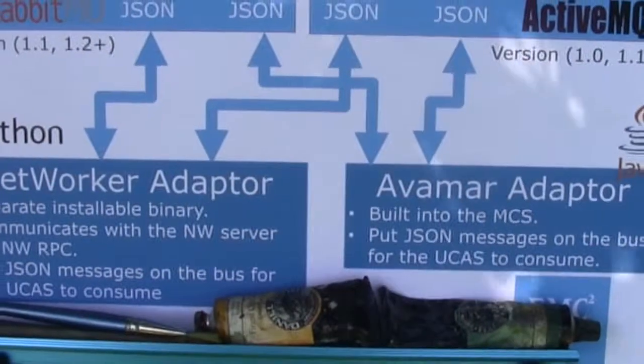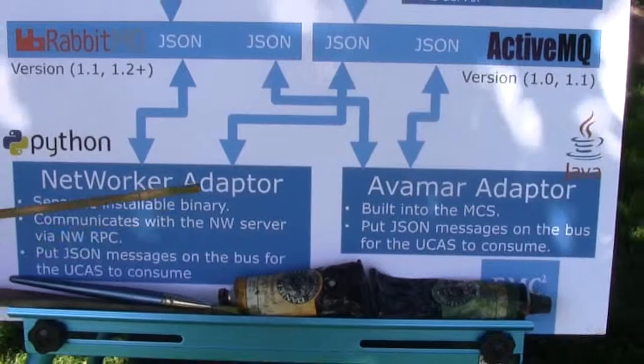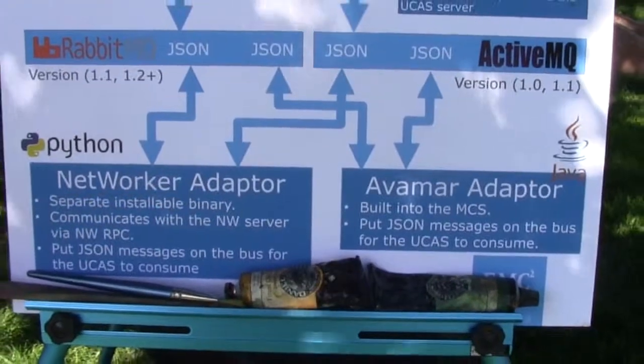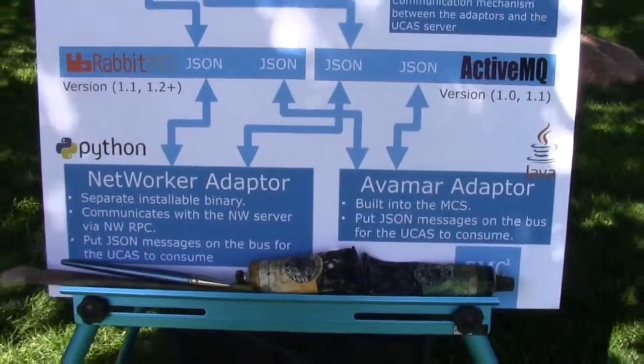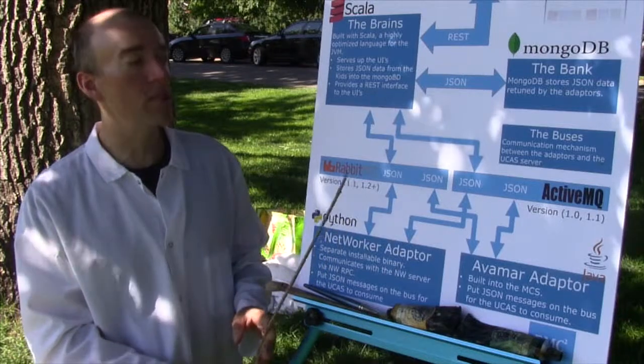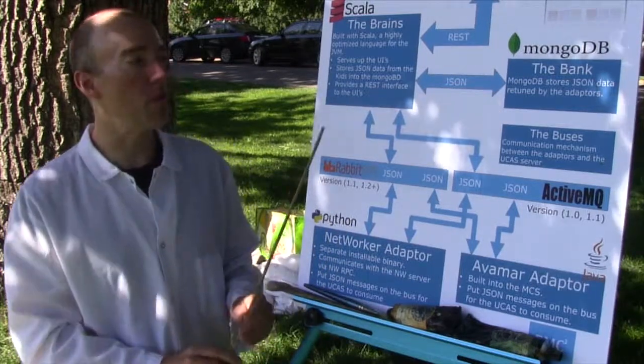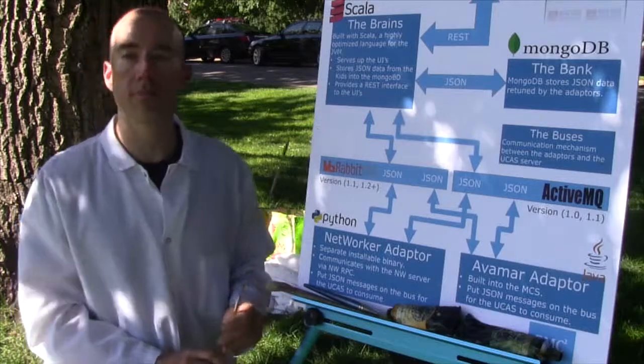On each of the backup products, we run a small adapter. On the Networker backup product, the adapter is written in Python, and for Avamar it's written in Java. Those adapters publish events to the MessageBus, which are collected by our Scala server so we can build reports and graphs. BRM is packaged as a virtual appliance and also as an ISO image, and it's ready to be installed in your backup infrastructure today.